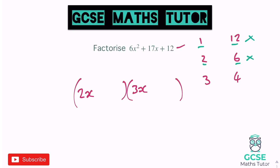For the pair 3 and 4: double 3 is 6, triple 4 is 12 — or triple 3 is 9, double 4 is 8. Which option makes 17? It's the 9 and 8. So I want the 3 to be tripled — that means putting the 3 in the opposite bracket to the 3x. And I want the 4 to be doubled — so that goes in the other bracket. It's all pluses: 2x plus 4 and 3x plus 3. You've just got to take your time, really think about those factors, and write down as much as you need.